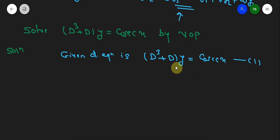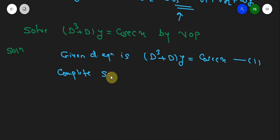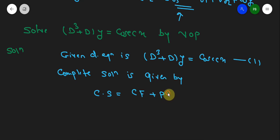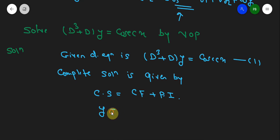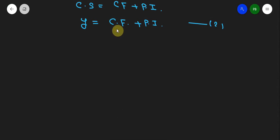The complete solution equals complementary function plus particular integral, where the dependent variable is y. To find the complementary function, we write the auxiliary equation by taking the left-hand side and setting the right-hand side equal to zero: D³ + D = 0. Taking D as common, we get D(D² + 1) = 0.